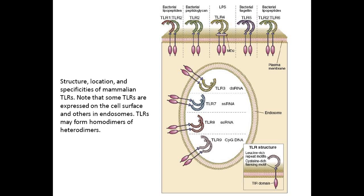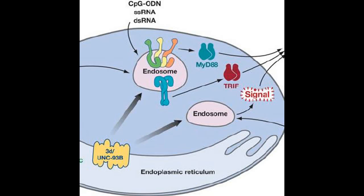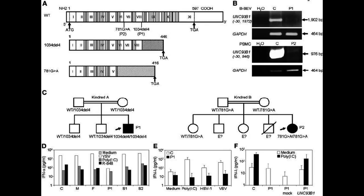TLRs 3, 7, 8, and 9 are mainly expressed inside cells on endoplasmic reticulum and endosomal membranes. Double-stranded RNA binds to TLR3, and unmethylated CpG motifs bind to TLR9. TLR7 and TLR8 recognize single-stranded RNA, and TLR9 recognizes single- or double-stranded DNA. These nucleic acid ligands are not unique to microbes, but their location in endosomes likely reflects origin from microbes. A protein in the endoplasmic reticulum called UNC93B is required for the endosomal localization and proper function of TLRs 3, 7, 8, and 9. Genetic deficiency in UNC93B leads to susceptibility to certain viral infections, especially herpes simplex virus encephalitis.